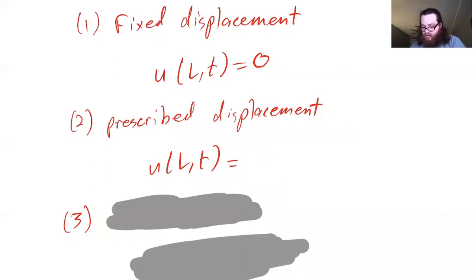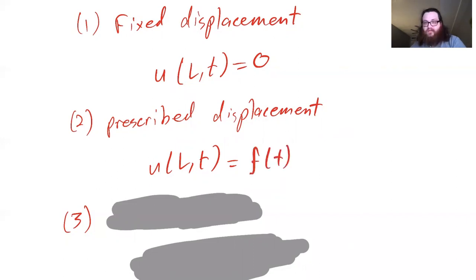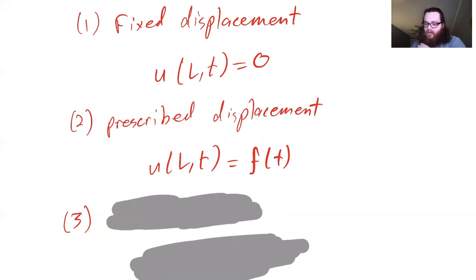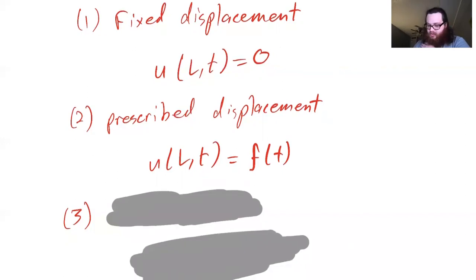The prescribed displacement condition is written as u(L, t) equal to some function of t, since the displacement of the string at the right endpoint is just going to be some given function. As an example, we might vibrate the string and move the right endpoint up a little bit or down a little bit — we're prescribing how the end of the string is moving.